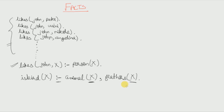We already know that X will be a sister of Y only if X is female and X and Y have the same parents. This is obvious. So how can we write this in Prolog?